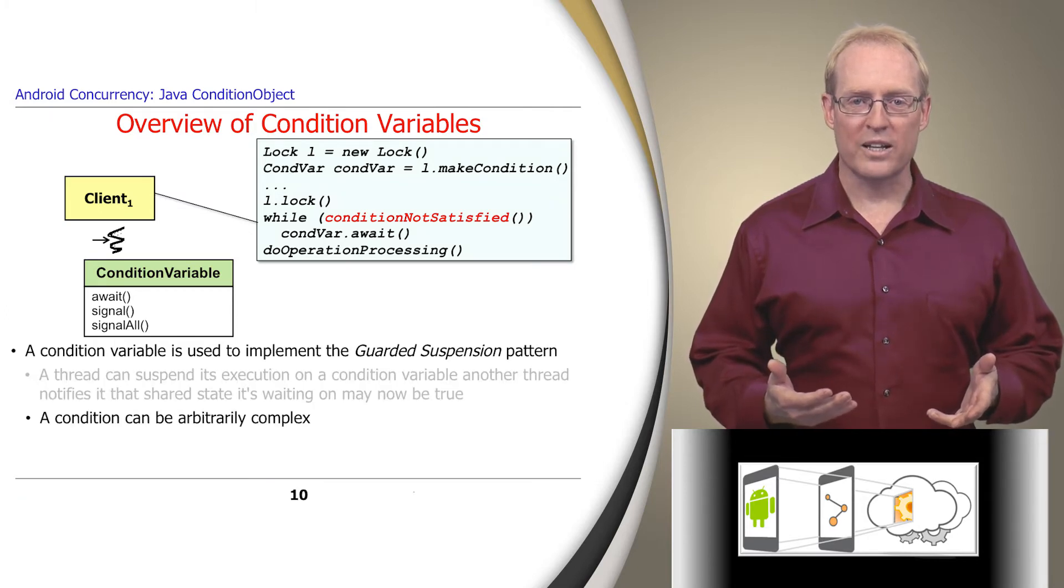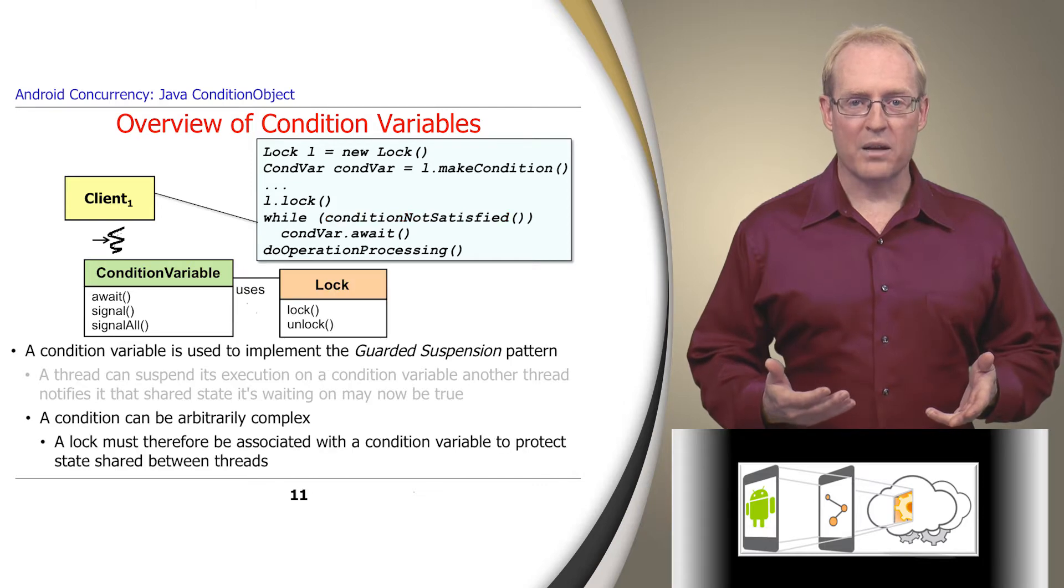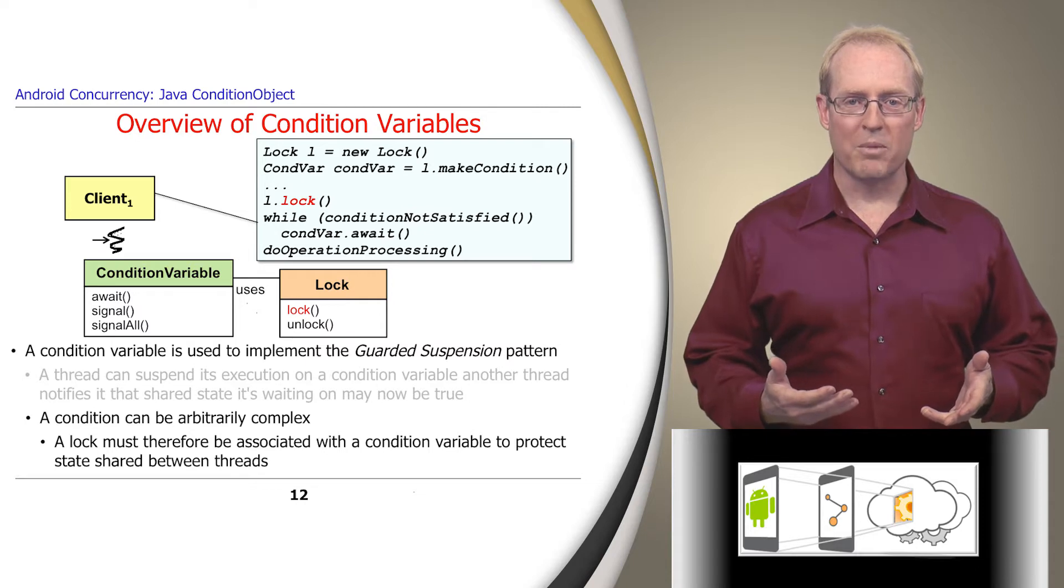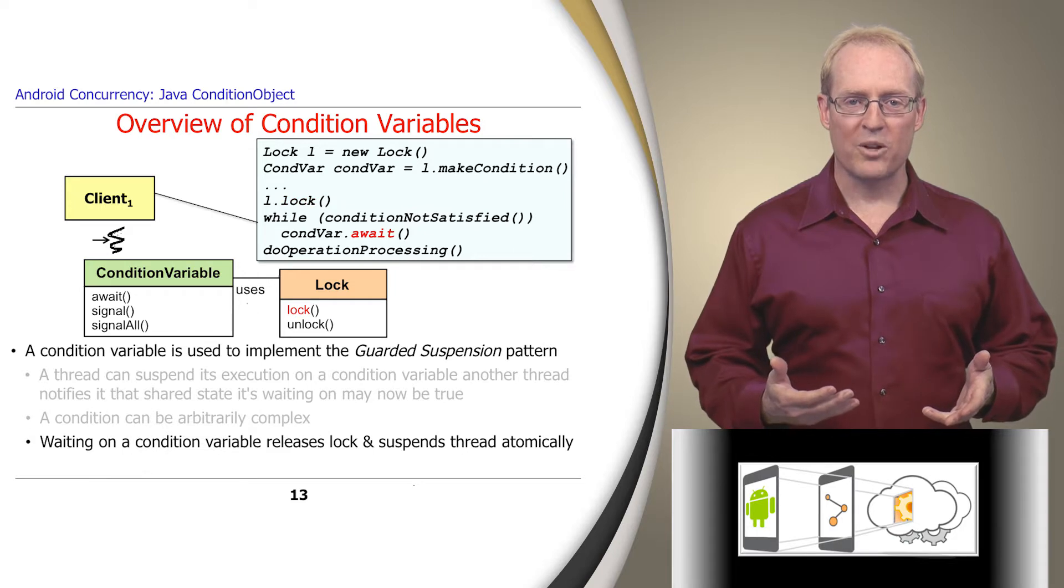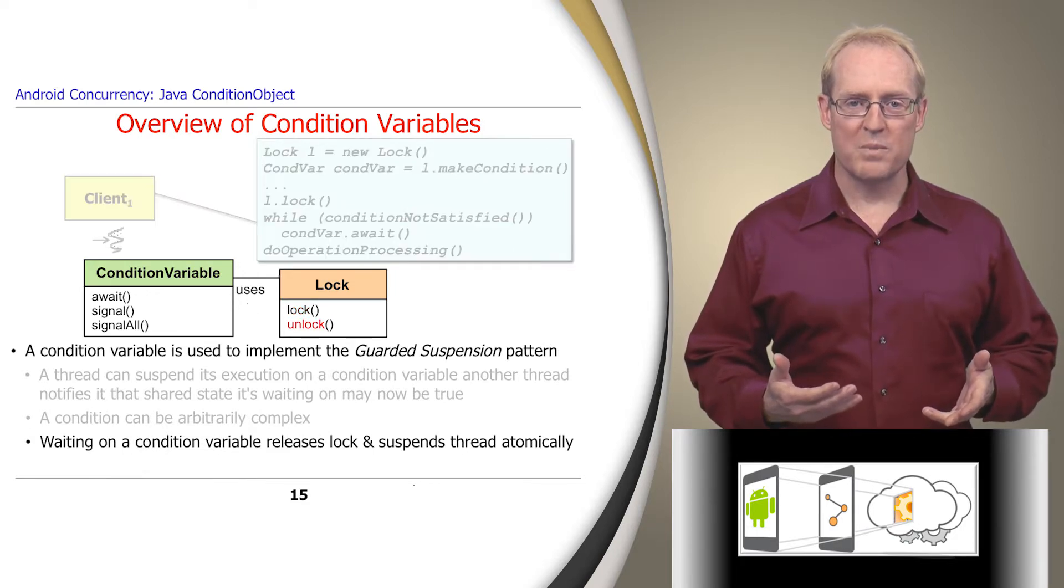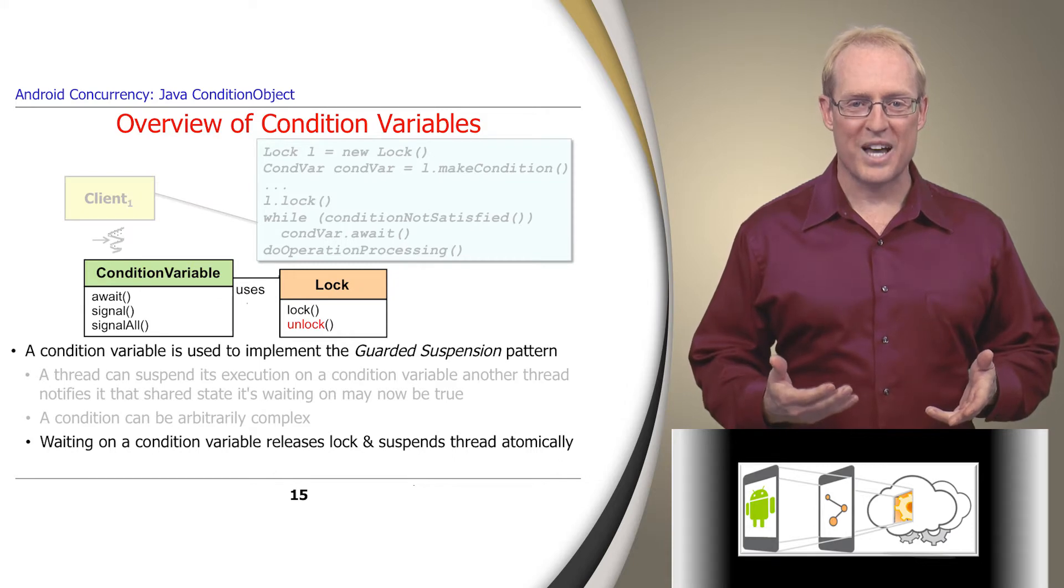This condition can be arbitrarily complex. So a lock must be associated with the condition variable to protect the shared state in the condition from being corrupted by other concurrently running threads. When a thread waits on a condition variable, the lock associated with it is released, and the thread is suspended atomically until the condition is satisfied.